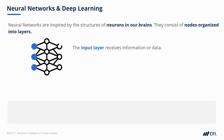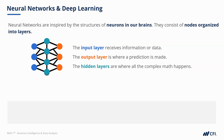First, we have the input layer, which receives the input data. In image recognition, for example, each input node might represent a pixel from an X-ray. The output layer is where a prediction is made, so we might have two or more classes here. In between, we have the hidden layers, which is where the data is combined, transferred, where complex calculations are done, and possibilities are statistically considered. All of this computational effort results in the predictions we see in the output layer.